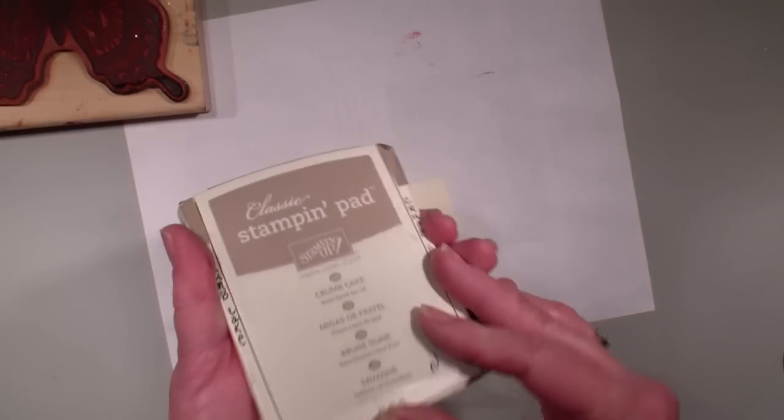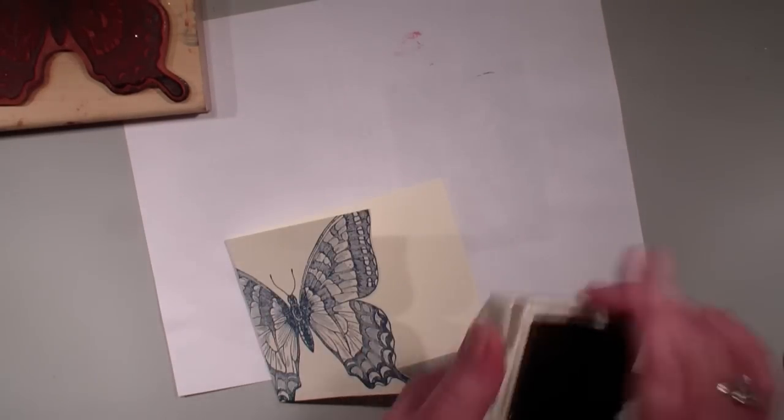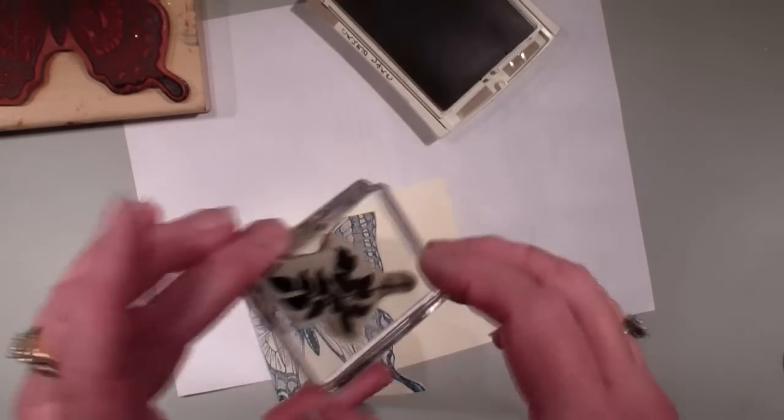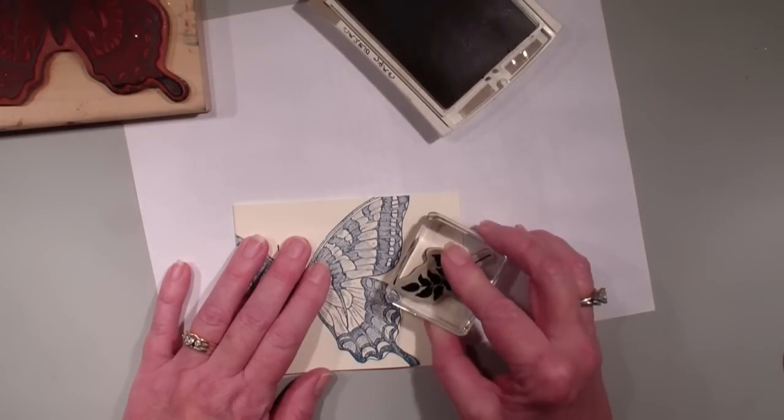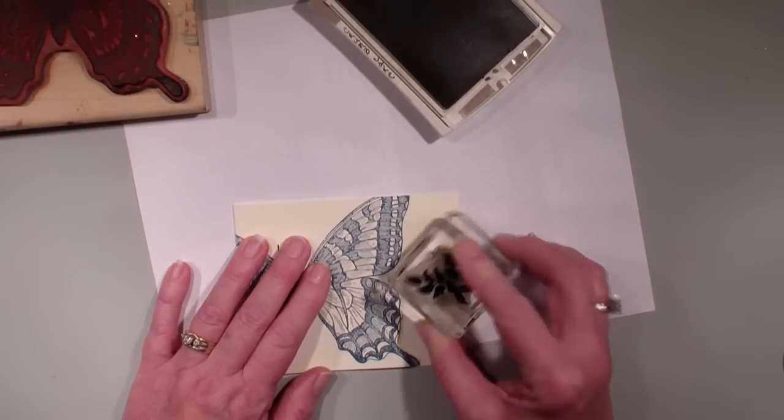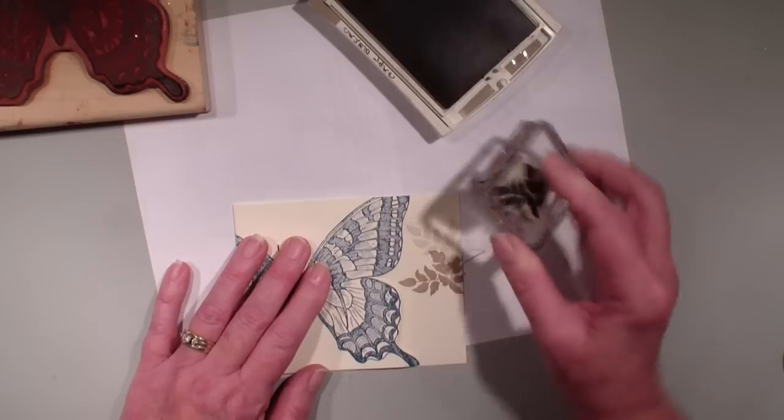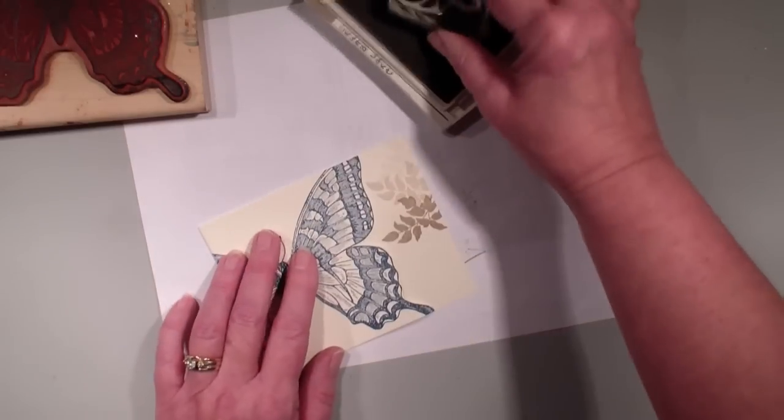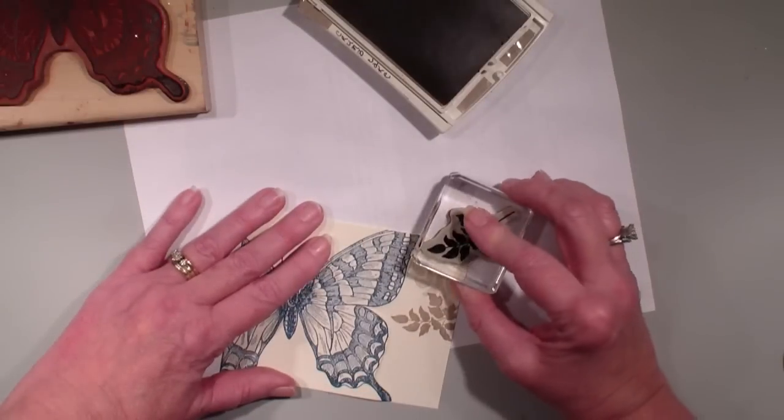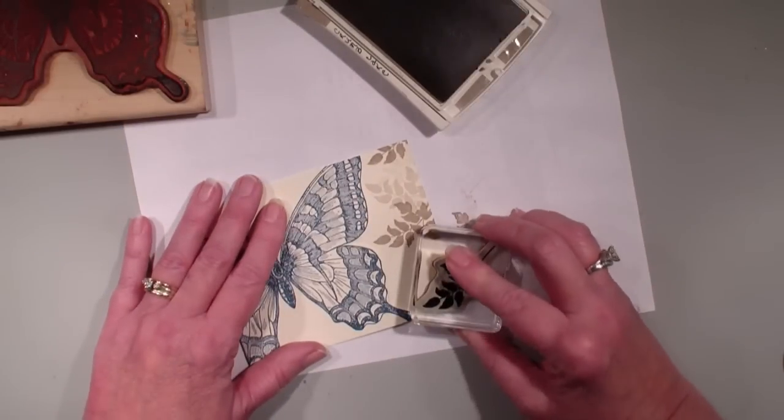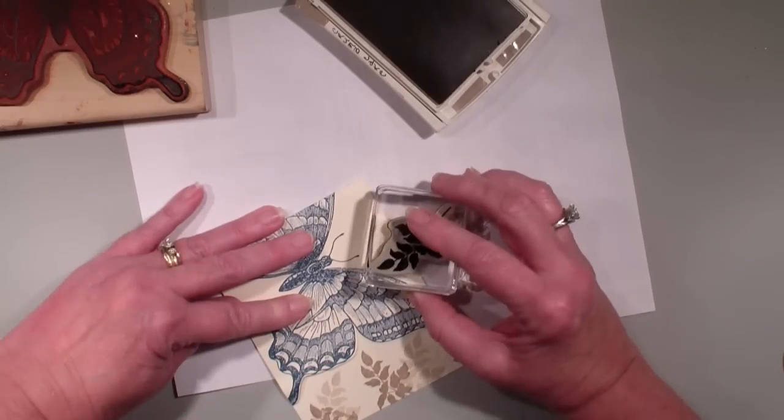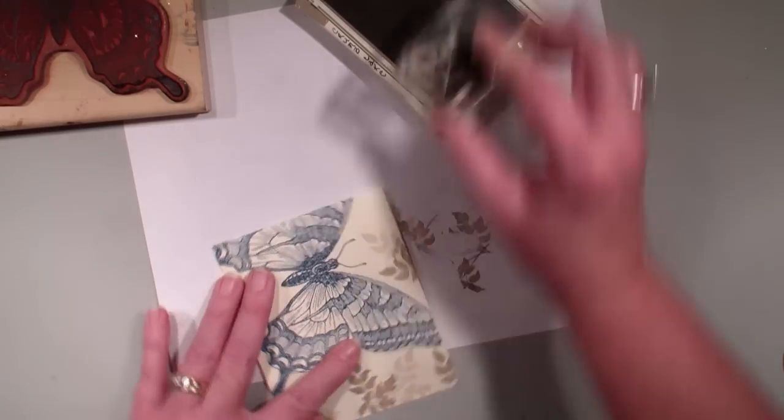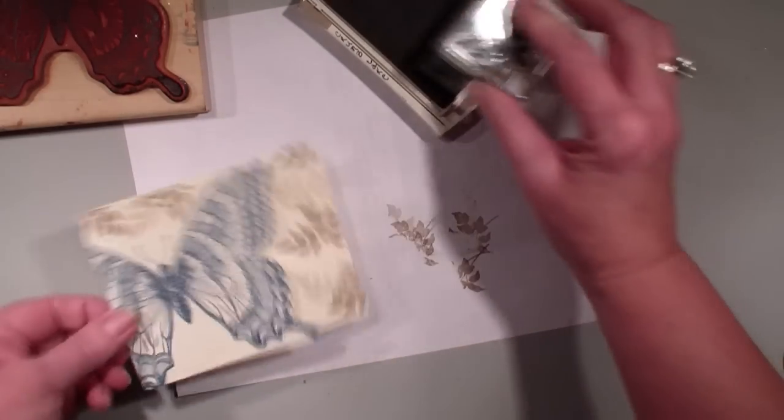I'm going to do is I'm going to bring in my crumb cake and the leaves from, I believe these leaves are from the kind of eclectic stamp set. I'm going to stamp full strength and then stamp off a couple of times so that I get lighter shades and just making an interesting border along that card. I'm going to do it in the opening of that butterfly.